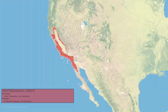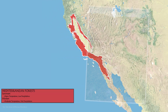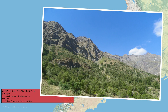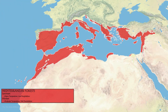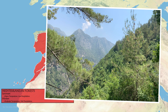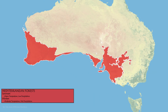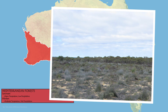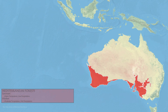The Mediterranean forests and shrublands occur in California, Chile, obviously the Mediterranean, southwestern Australia, and southern Africa. They're very common on western-facing lands, where the summers are long, warm, and dry, with the winters being wet and mild.